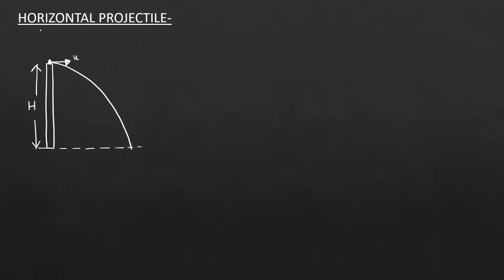Here we have Type 2 projectile. Type 1 projectile, which we studied, was an oblique projectile — a particle projected from the ground at a certain angle theta from the horizontal. Type 2 is a horizontal projectile: a body projected horizontally from any height above the ground. It will follow a parabolic path, and we need to find its equation, time to reach the ground, and more.